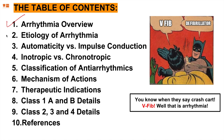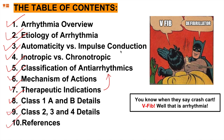Today we'll cover: arrhythmia overview, etiology, automaticity versus impulse conduction, inotropic versus chronotropic, classification of arrhythmics, anti-arrhythmics, mechanism of actions, therapeutic indications, then class 1A and B, class 2, 3, and 4, ending with references.